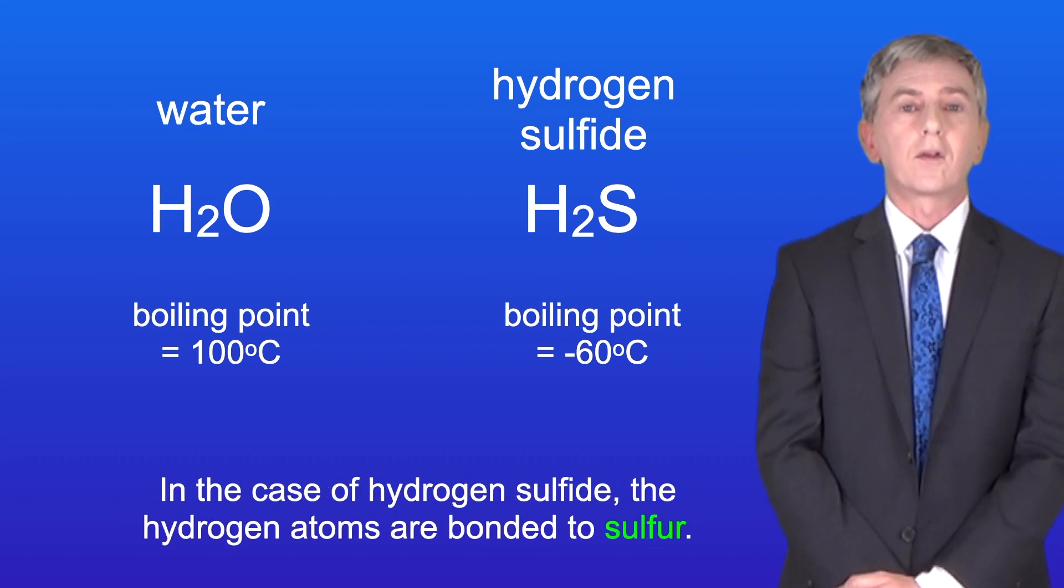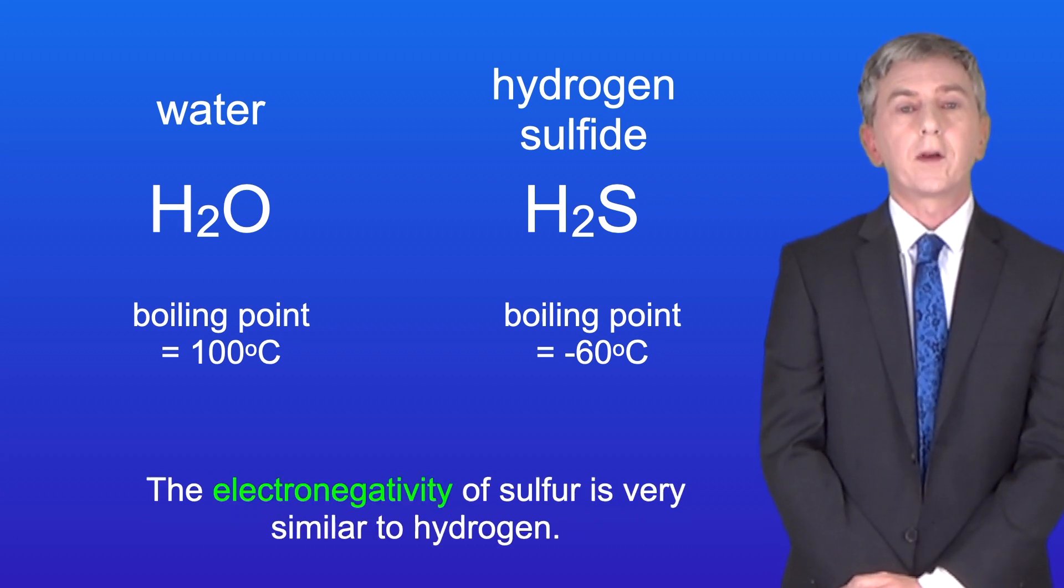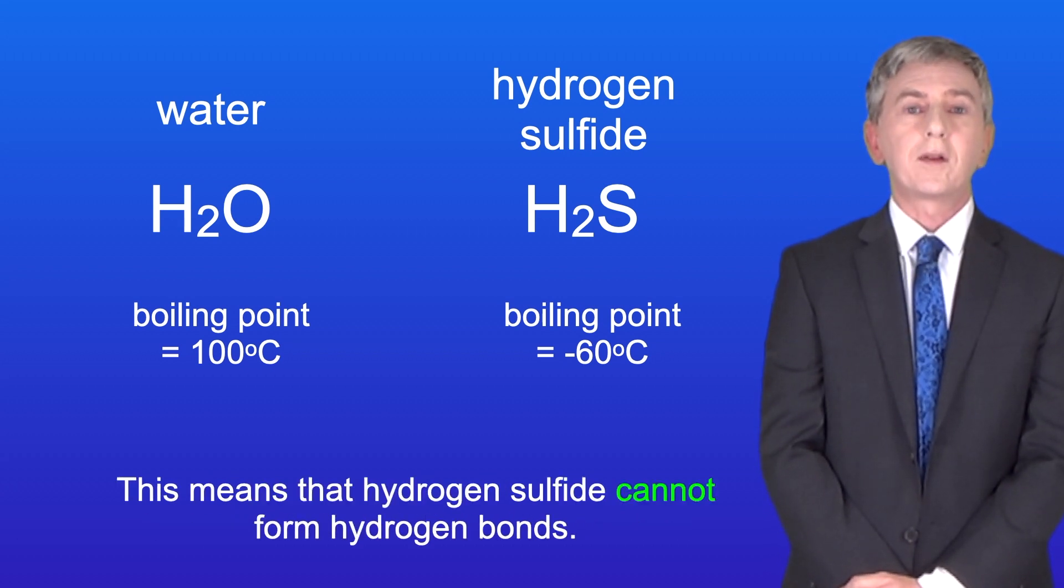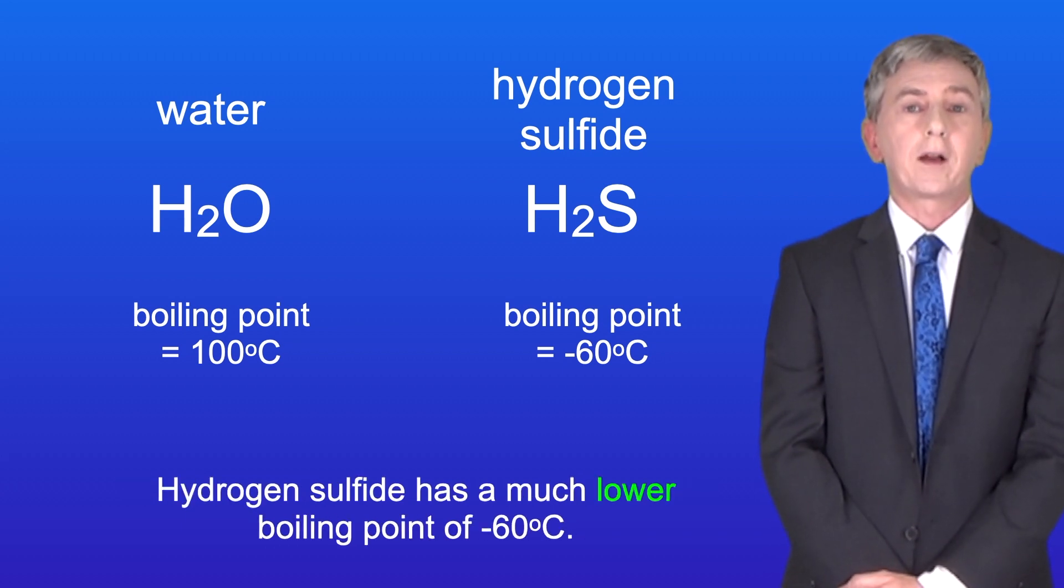In the case of hydrogen sulfide, the hydrogen atoms are bonded to sulfur. The electronegativity of sulfur is very similar to hydrogen, so this means that hydrogen sulfide cannot form hydrogen bonds. And hydrogen sulfide has a much lower boiling point of minus 60 degrees Celsius.